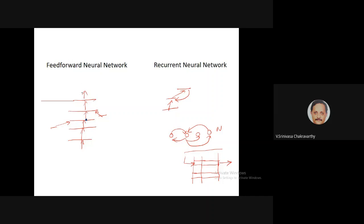There's no dynamics in a feedforward network because there are no loops. The moment you have a loop you'll have dynamics. When you give input x, instantaneously you'll get output y, and there is no memory because there are no loops. Whereas in a recurrent network the very first feature is that there are loops — activation x becomes y, and y is fed back, meaning activation from the past is reused.